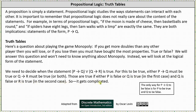So it gets complicated. Remember, the only way an implication in the form of 'if p then q' is false is for p to be true and q to be false.